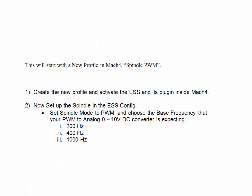We will now set up the spindle in the ESS config. Set the spindle mode to PWM and choose the base frequency that your PWM-to-analog 0-to-10 volt DC converter is expecting. Some converters expect 200 Hz, some expect 1 kHz or 400 Hz. It doesn't really matter — choose what works with yours.